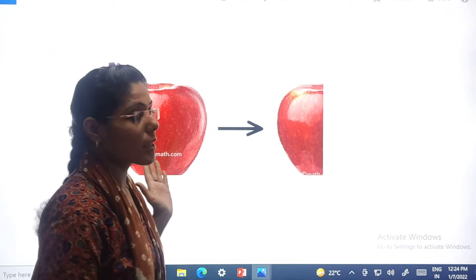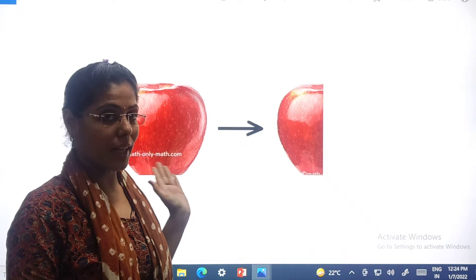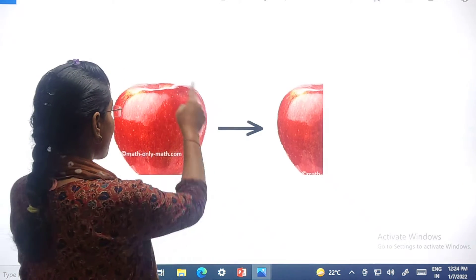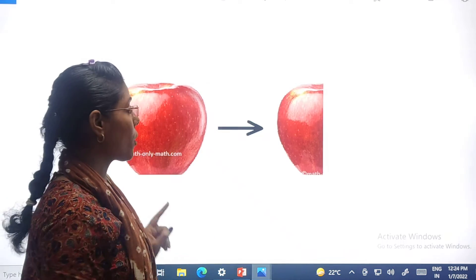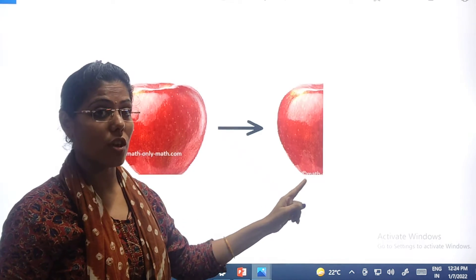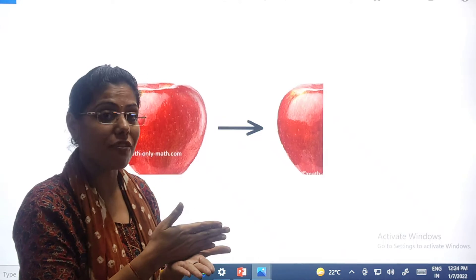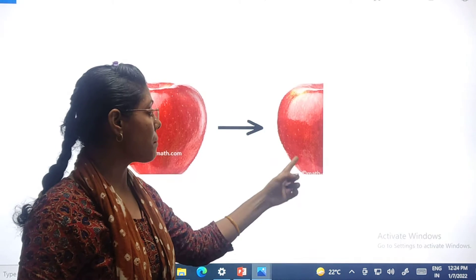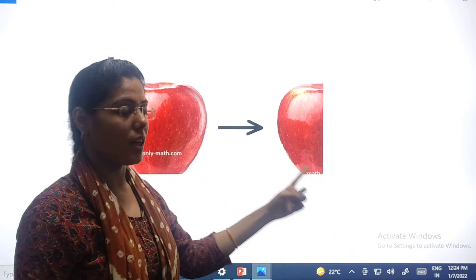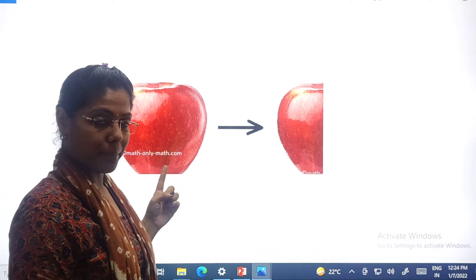Now you can see the picture of apple. You can see a picture of an apple. It is a full apple. This is a full apple. Now this is the picture of half apple. Half means aada. This is the picture of half apple, and this is the picture of full apple.